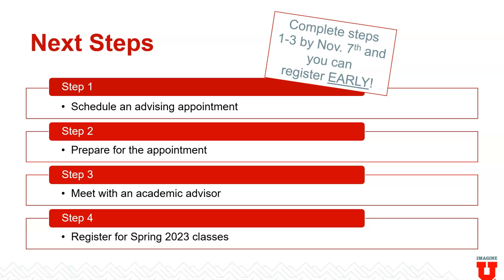What are your next steps or responsibilities as part of the Milestone Advising Program? Step one is to schedule that advising appointment. Step two is to prepare for the appointment through watching a series of videos about tools like the degree audit and to learn about the major exploration process. Step three, meet with your academic advisor. Step four, register for spring 2023 classes. If you complete steps one through three by November 7th, you will get early registration access for those spring courses.